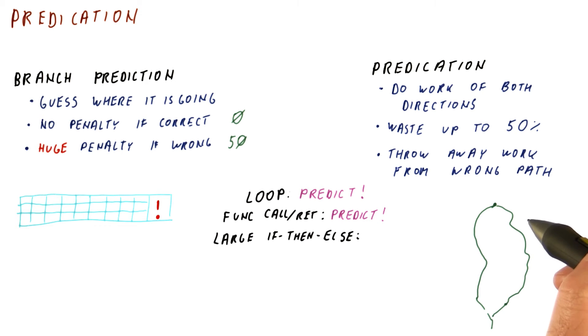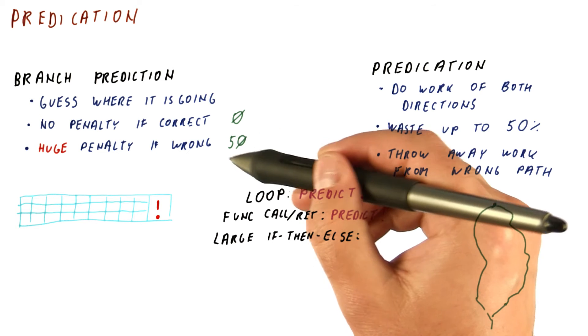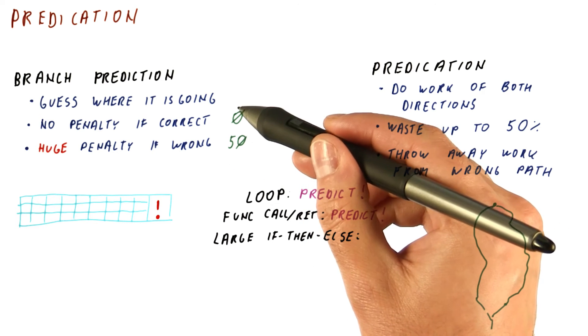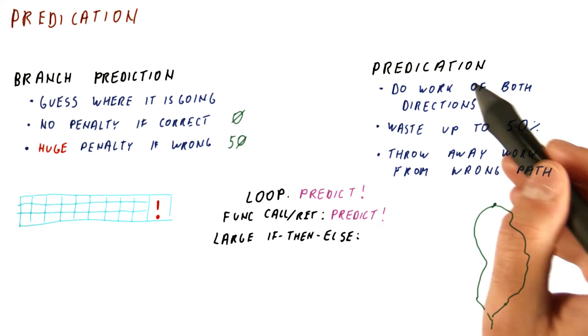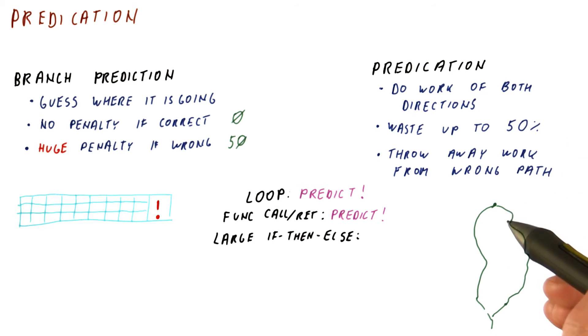And the answer here is that if we predict, we waste up to 50 instructions, more likely we waste nothing. If we predicate and these branches have equal weight, then let's say we have 100 instructions here and 100 instructions here.